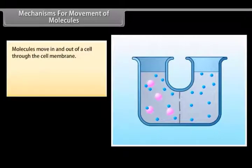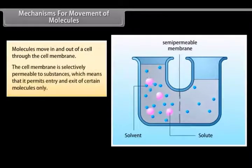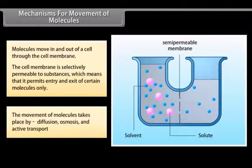Mechanisms for movement of molecules. Molecules move in and out of a cell through the cell membrane. The cell membrane is selectively permeable to substances which means that it permits entry and exit of certain molecules only. The movement of molecules takes place by diffusion, osmosis and active transport.